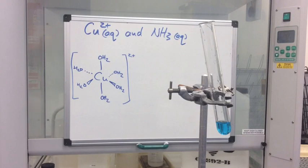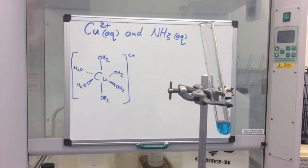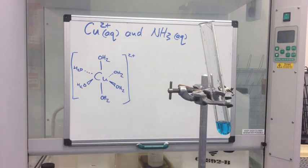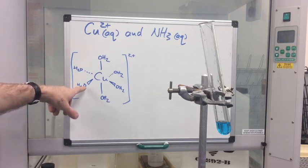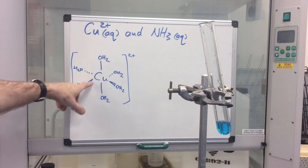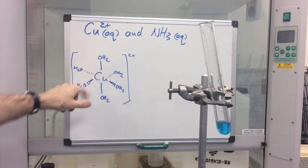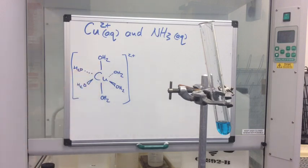The first ligand substitution reaction we'll look at is that between aqueous copper 2+ ions and aqueous ammonia. In this test tube I've got a solution of aqueous copper 2+ ions — you can tell because of the blue colour — and I've drawn the structure of the complex ion on the board: the copper hexa aqua 2+ ion. Six water ligands are attached via the lone pair on the oxygen, giving a dative covalent bond. The six ligands are arranged octahedrally with bond angles of 90°, and the coordination number is six.